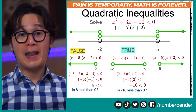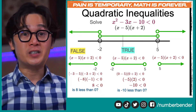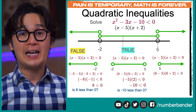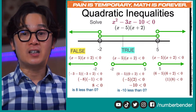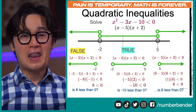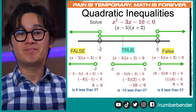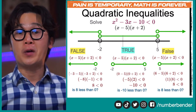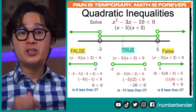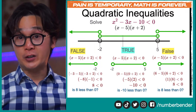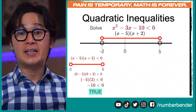For the last partition — anything greater than 5 — let's use x equals 6. We get 1 times 8, which is 8. Is 8 less than 0? Just like the first partition, this is false, since positive 8 is definitely not less than 0. So we're done with step 2: testing which partition makes the inequality true.